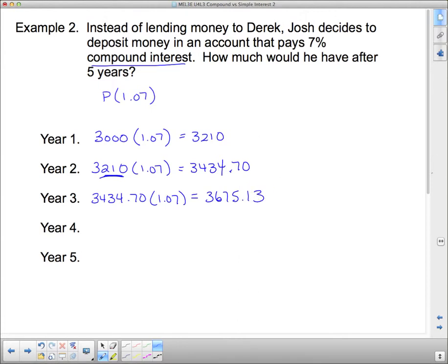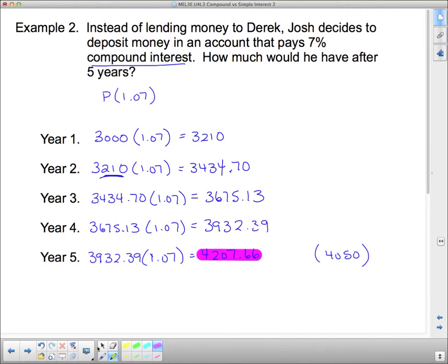Now I'm just going to quickly do the next two calculations. Okay, so what we end up with here is 42. Oops, that's not the color I want to undo. Let's go with yellow. 42.07.66 is what we get as a final amount. Now remember, this is what Derek was going to give him, or what he was going to end up with after Derek gave him simple interest. So compound interest added up a whole lot quicker. We've got another $157.66 over here.